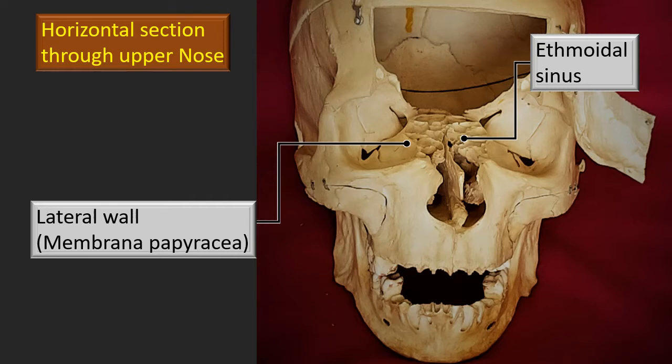When you look at the ethmoid bone anatomy, you will notice that on top is the cribriform plate. Hanging directly below it is the perpendicular plate of the ethmoid bone, a component of the nasal septum. On either sides are the two ethmoidal labyrinths. These two ethmoidal labyrinths have a medial wall and a lateral wall. The medial wall we have seen in the lateral wall of the nasal cavity, but the lateral wall is a plate which also forms the medial wall of the orbital cavity.